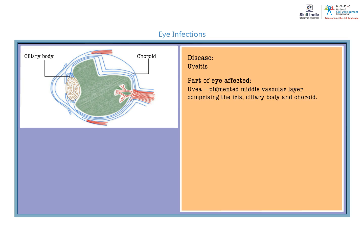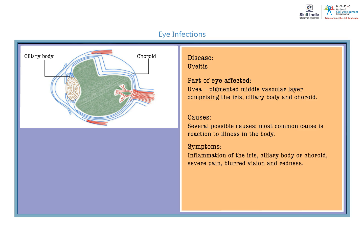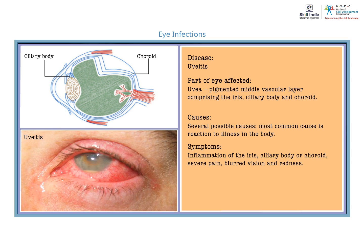The iris, ciliary body, and choroid together make up the uvea. When infections affect the uvea, it is known as uveitis. The infection can be caused due to several causes, but the most common cause could be a reaction to some illness in the body. Due to inflammation in the uvea, the patient complains of severe pain, blurred vision, and redness in the eye.